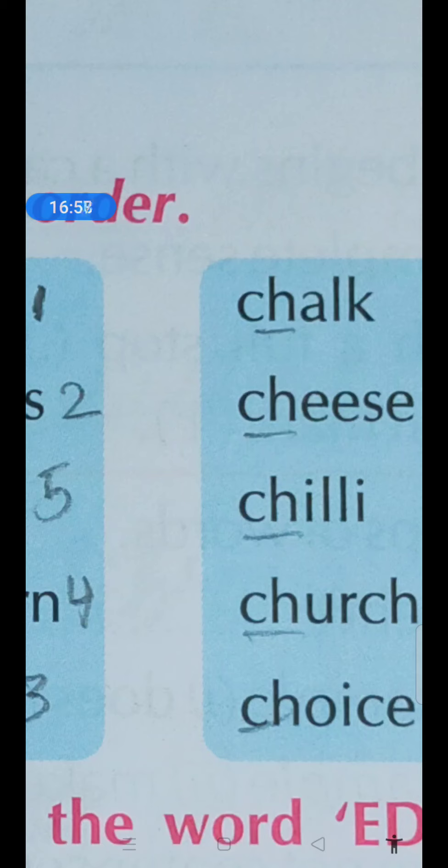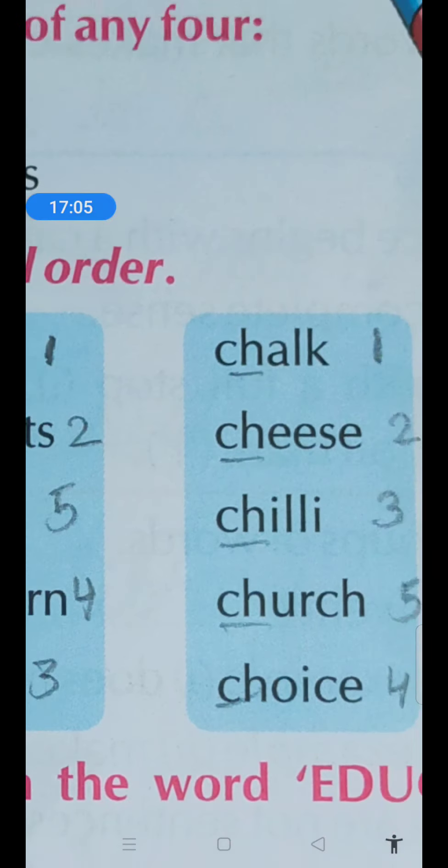F, G, H, I - chili. J, K, L, M, N, O - choice. And at last church for you. Is it okay students?